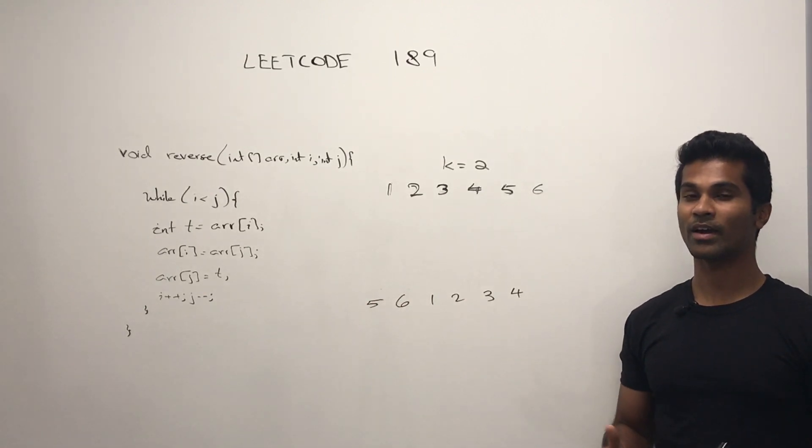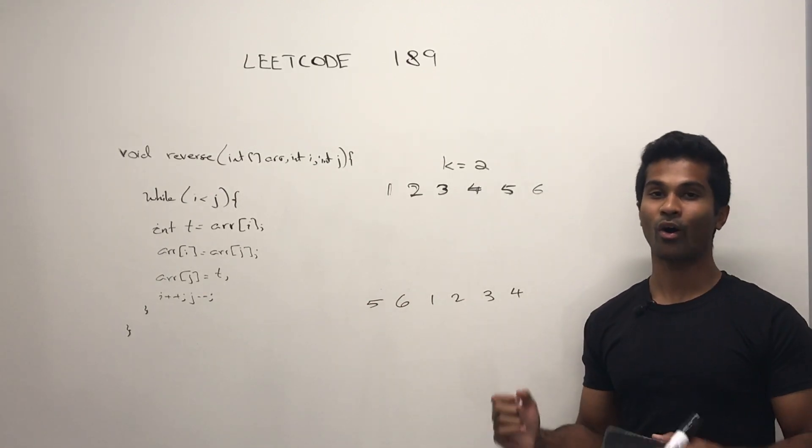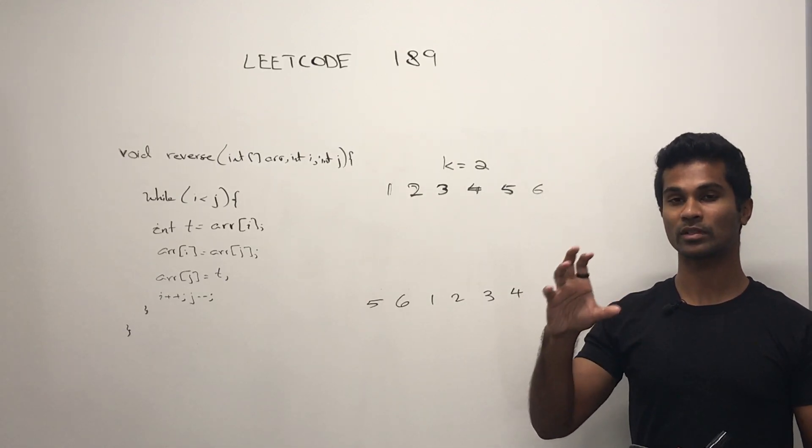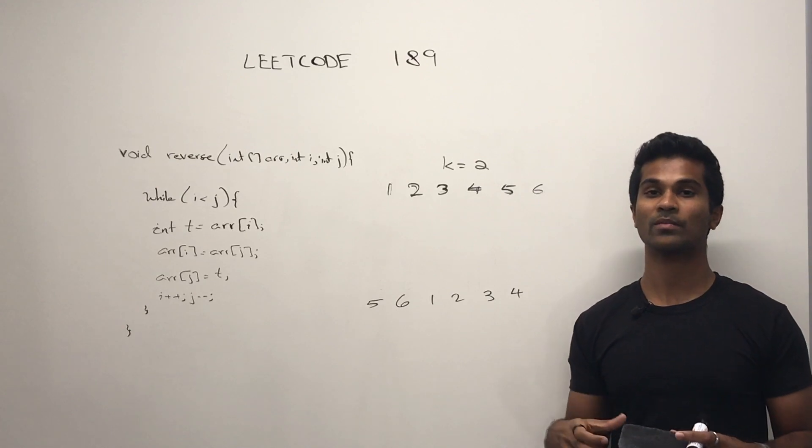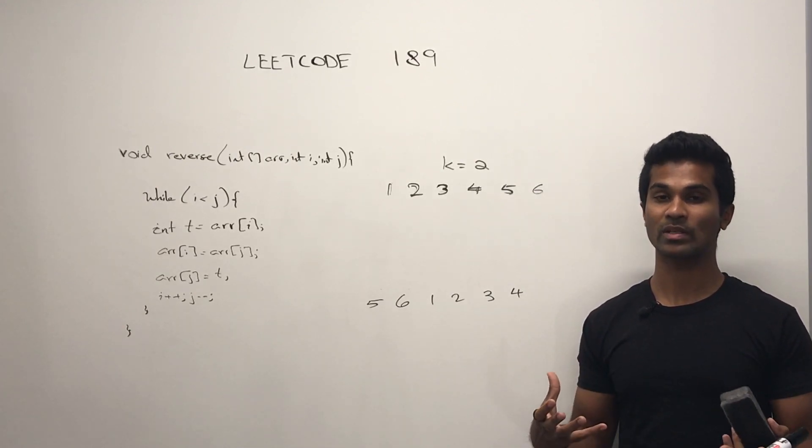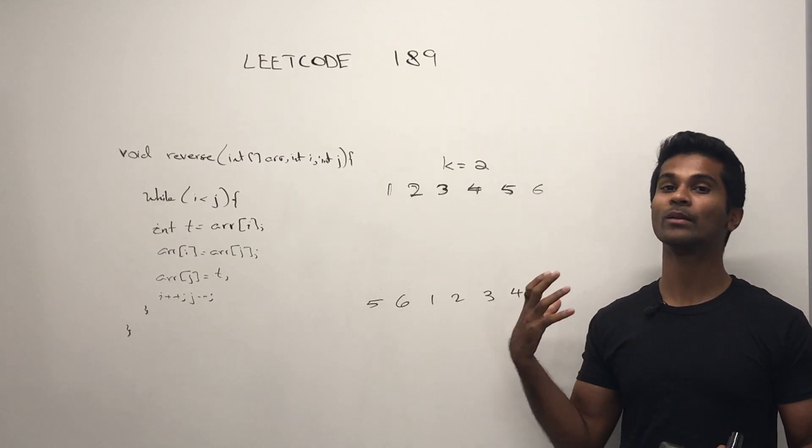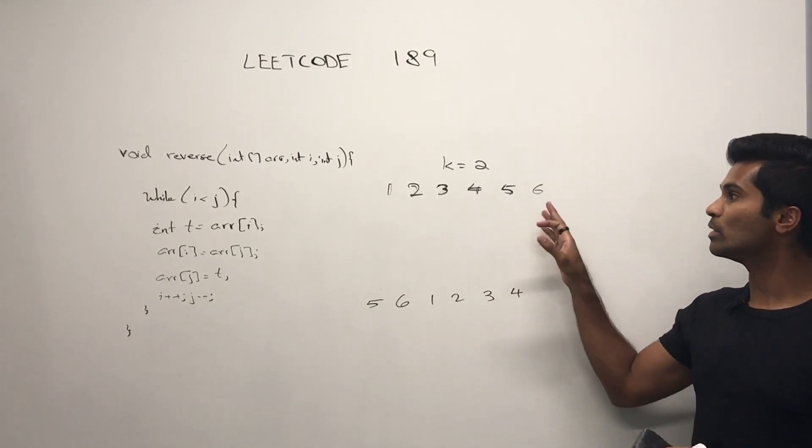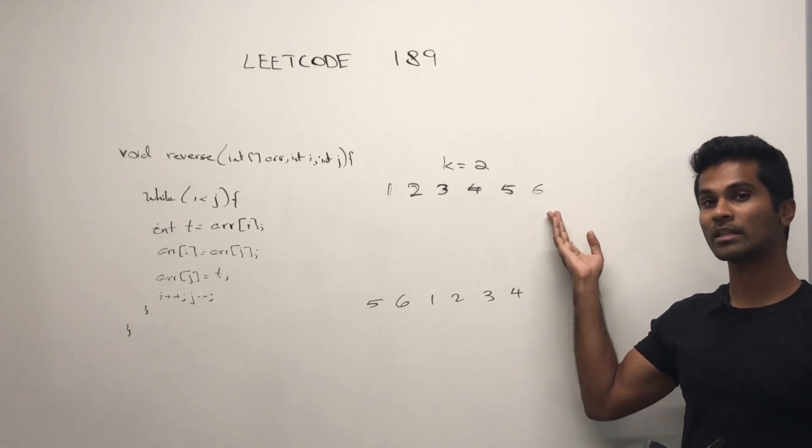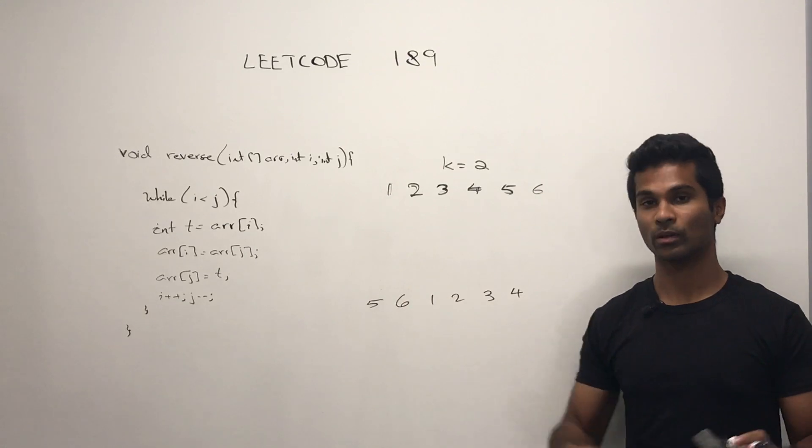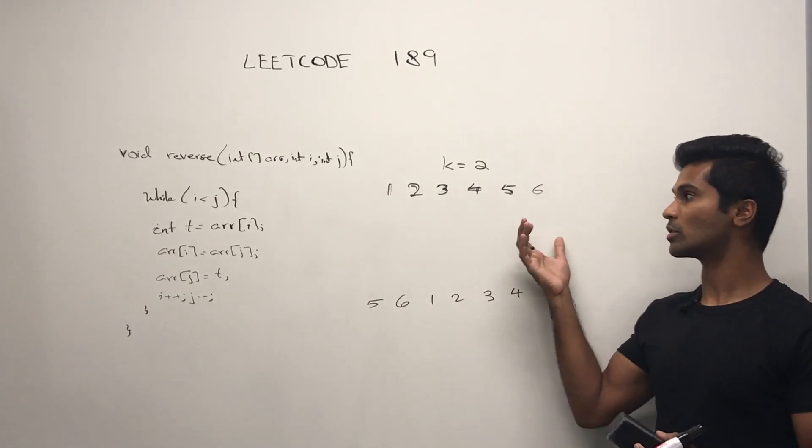Well, we know that every time we rotate something to the right, all we're essentially doing is taking the element on the rightmost side and putting it to the left. So if we're rotating something k times, we're repeating that process k number of times. In other words, we're taking k elements from the right side and just sending them to the left side. So how can we send elements from the right side to the left side using the subroutine?